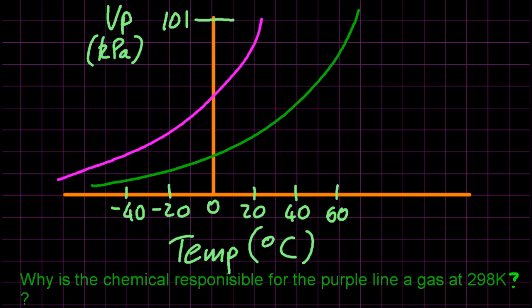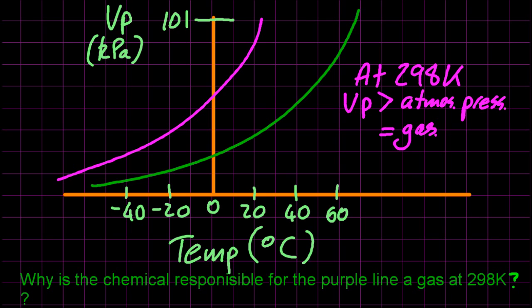Why is the chemical responsible for the purple line a gas at 298 Kelvin? Well, we just discovered that it boiled at 22 degrees C. But at 298 Kelvin, the vapor pressure is greater than atmospheric pressure, so it's going to be a gas. When it equals atmospheric pressure, it's boiling, so if it's greater, it's going to be a gas.